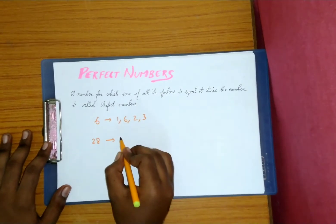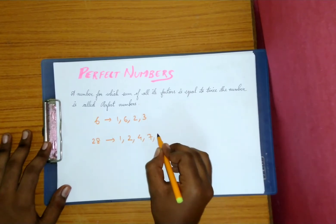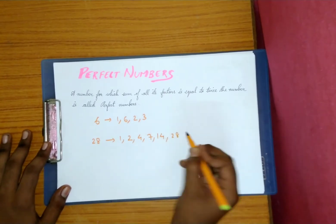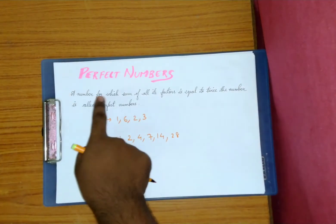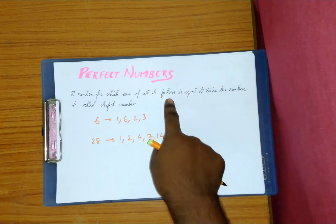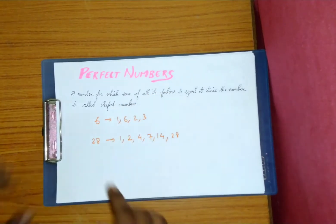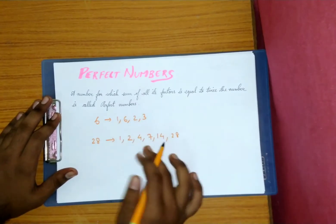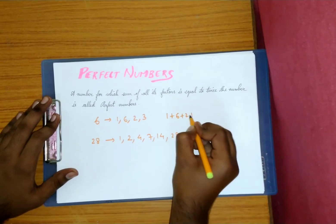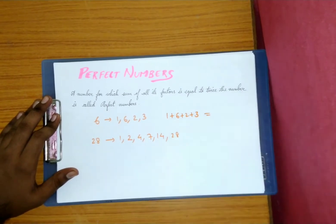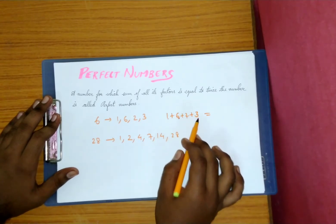28 factors will be 1, 2, 4, 7, 14, and 28. So a number for which the sum of all its factors... suppose 6 is a number, sum of all its factors, you have to add these four number factors. So we'll add 1 plus 6 plus 2 plus 3. What will you get? 1 plus 6 is 7, 7 plus 2 is 9, 9 plus 3 is 12.